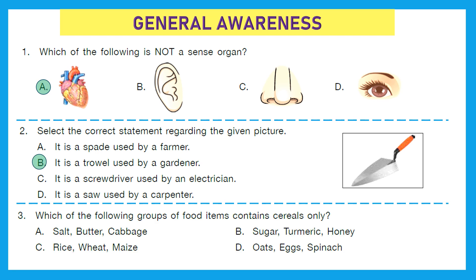Question 3: Which of the following groups of food items contains cereals only? Option A has salt, butter, cabbage — no cereal. Option B has sugar, turmeric, honey — again no cereal. Option C has rice, wheat, maize — all cereals. So the answer is option C.